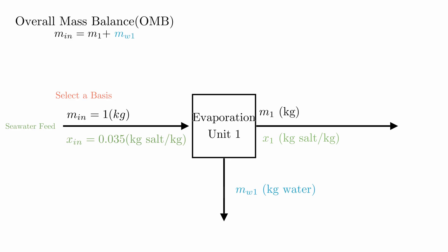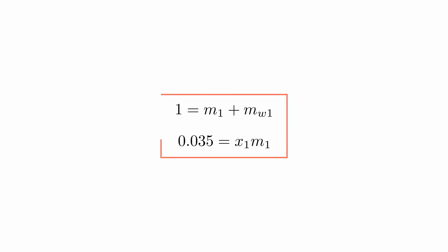Now we can do the mass balance on the salt in the system. N equals out. Great! We have two equations, but three unknowns. So we can't solve the system until they're equal.